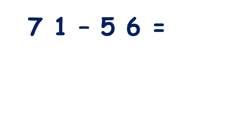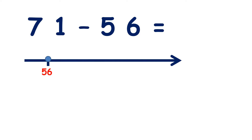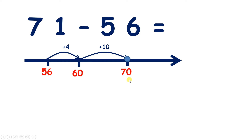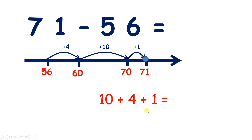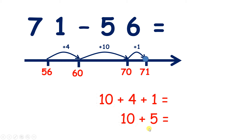Now we have 71 minus 56. So if we start on 56, how many more do we need to get to the next multiple of 10? Well, 6 and 4 make 10, so we need 4 more to get to 60. Then we need 10 more to get to 70, and 1 more takes us to 71. So now we can add 10, 4, and 1 — so we can add 10 and 5, and that gives us 15. So there's our answer.